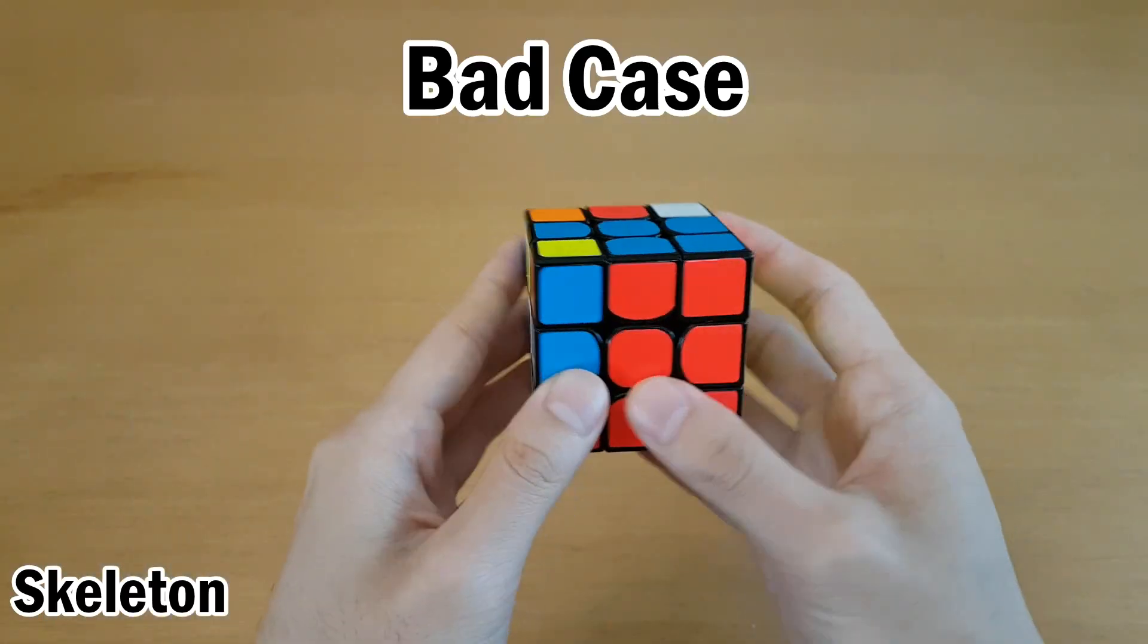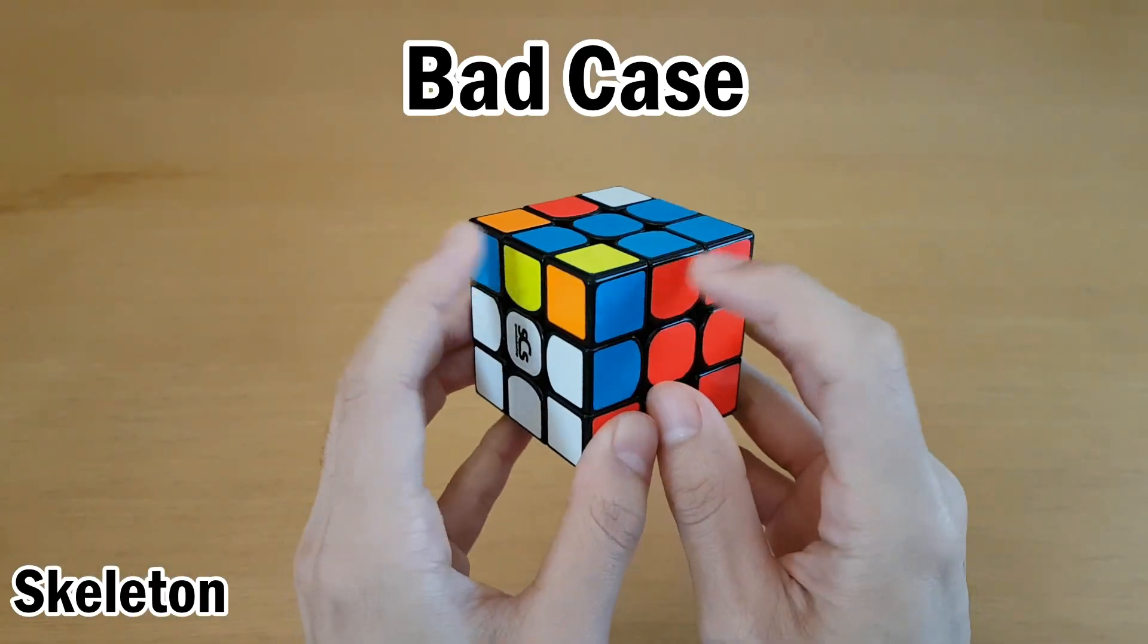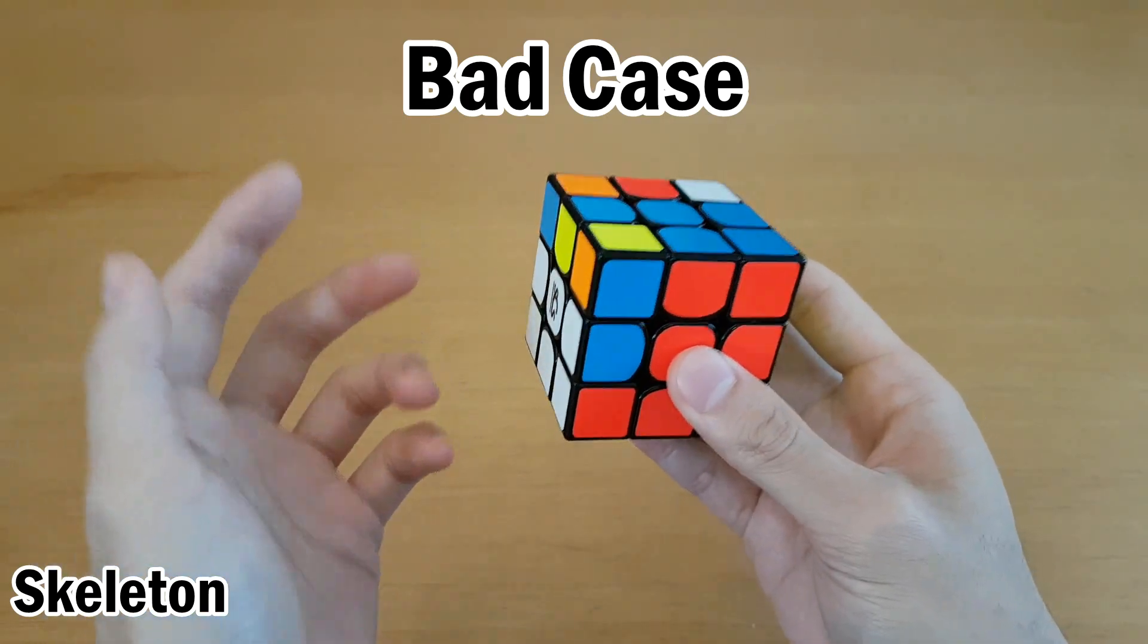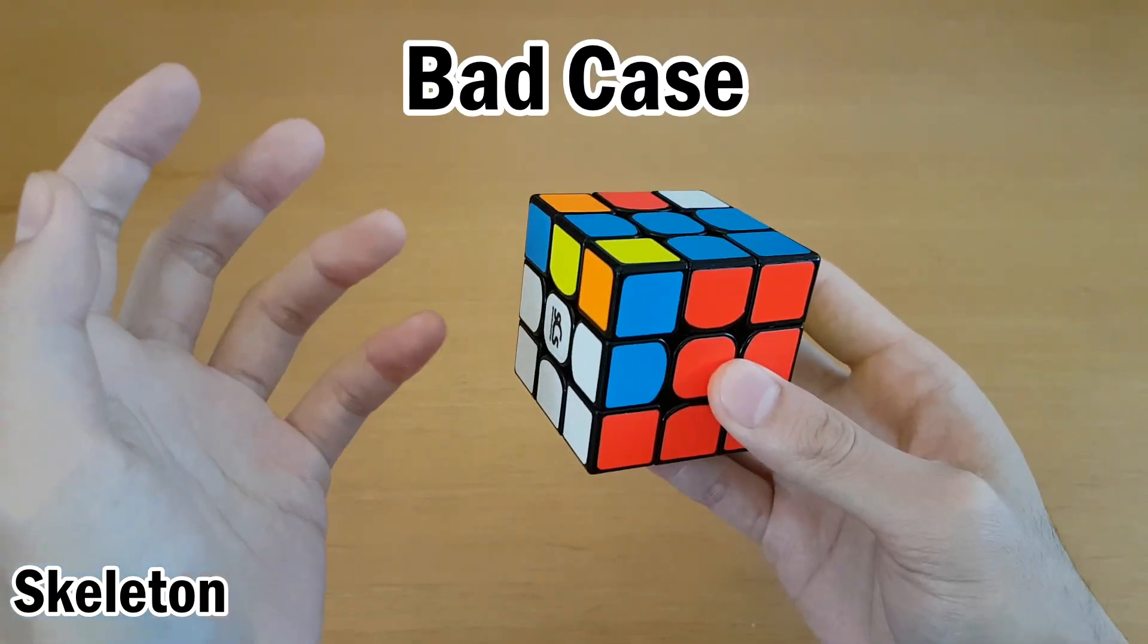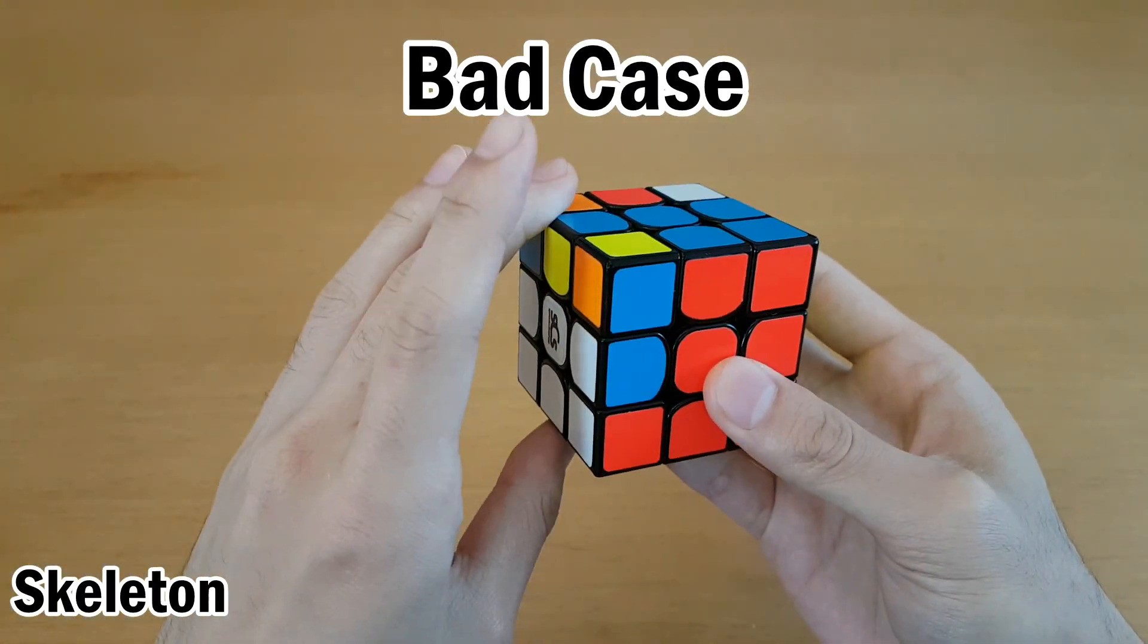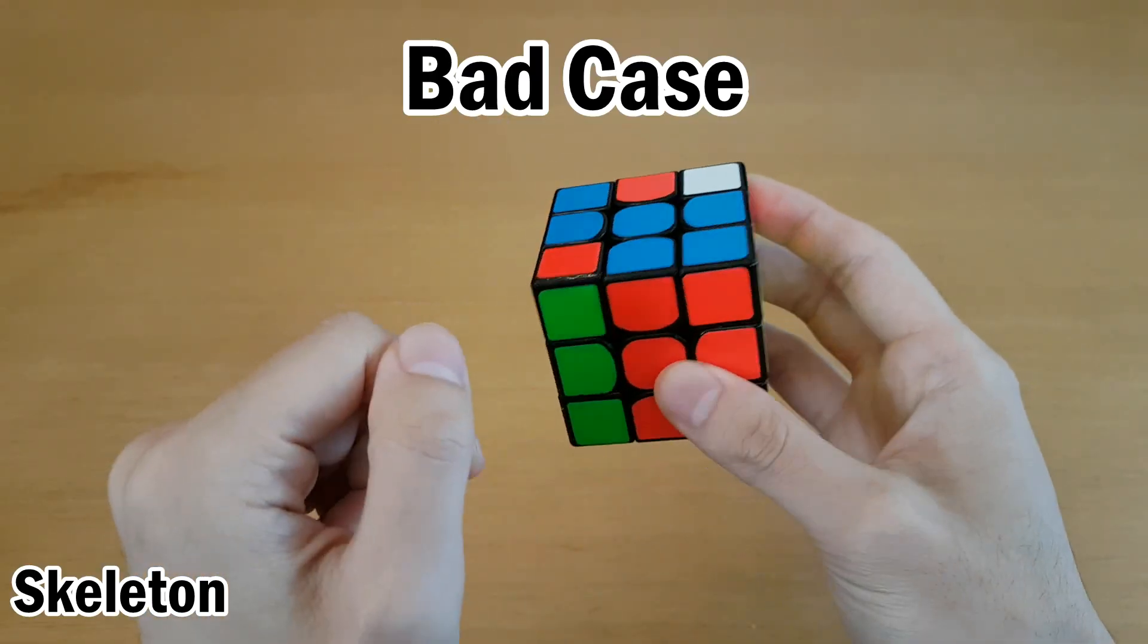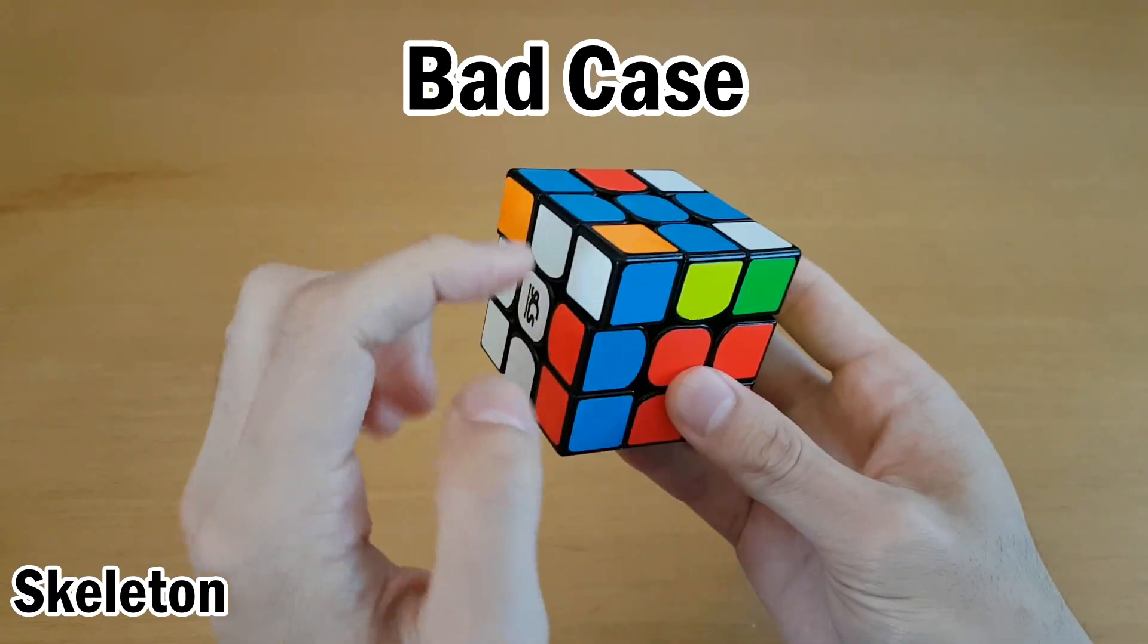But if you get a case where it's not just one wrong edge, so these two are not solved relative to each other, neither are these two, and neither are these two, then you're going to need a lot more moves to solve these edges. So ideally, you should go back through the solution and try to do something different so that this doesn't happen. But if you have to solve this anyway, you could move this one up to replace any edge and bring in one of the wrong edges, and see if that works. Now we have these two solved relative to each other, but the white one is not.